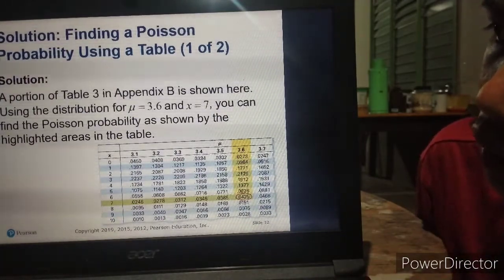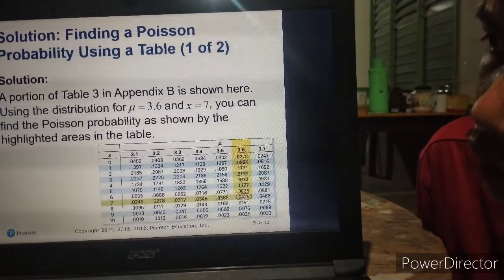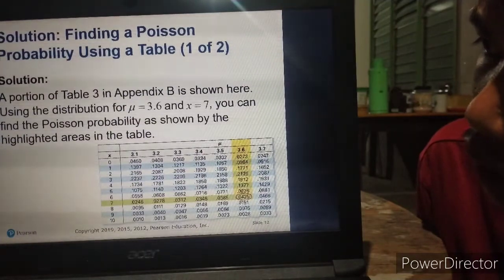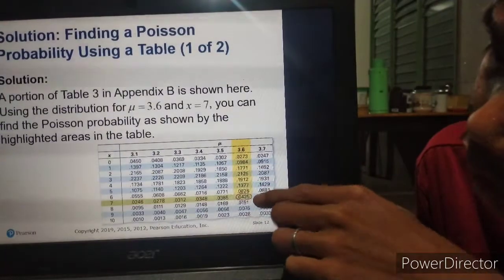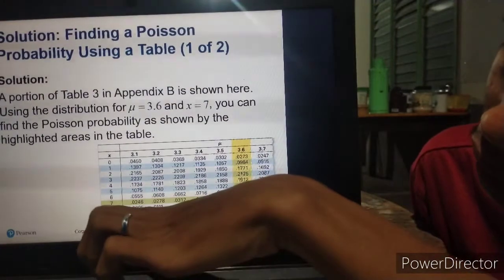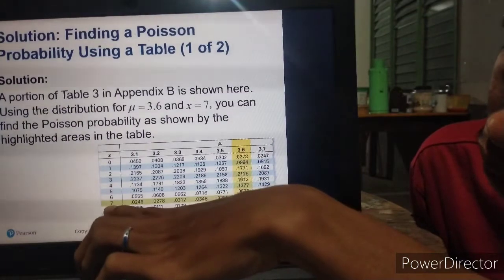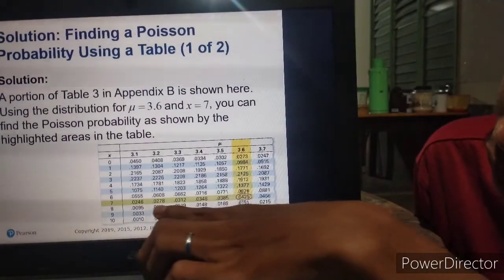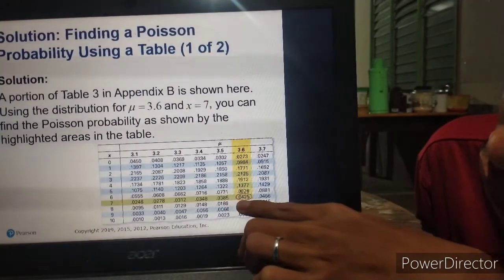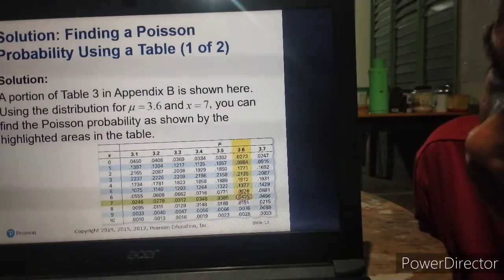Let's have the solution. A portion of Table 3 in Appendix B is shown here. Using the distribution with mean equals 3.6 and X equals 7, you can find the Poisson probability as shown by the highlighted areas in the table. This one is the highlighted area: 3.6, which is the mean, and 7 is X. So if you can find where they can meet, here at 0.0425.